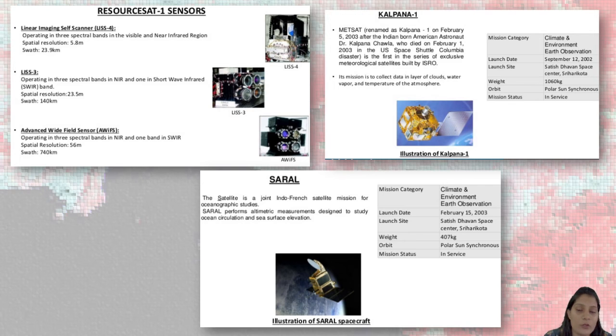Now, let's discuss of Kalpana 1. You might have heard this Kalpana 1. Basically, Kalpana 1 was developed to monitor the climate and environment Earth observation. It was launched in 2002. And it was 1060 kg. 1060 kg was the weight of that. Now, it was named firstly as MagSat but it was renamed as Kalpana 1. After Indian born American Astronaut Dr Kalpana Chawla died on February 1, 2003 in US Space Shuttle. This is how the mission is to collect the data of cloud, water vapor and temperature of the atmosphere.